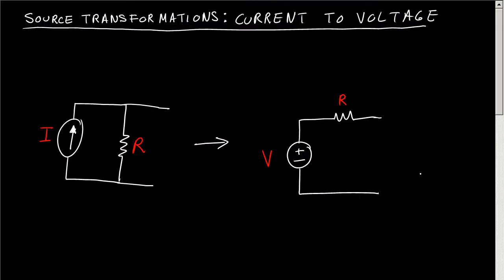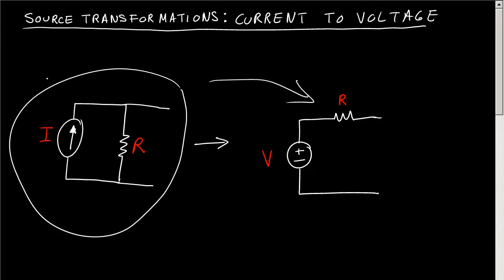Let's say you have a current source in parallel with a resistance. The source transformations formula says that you can change this circuit for a circuit that has a voltage in series with a resistance.